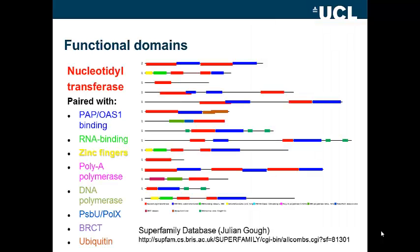This image, taken from the SuperFamily database, illustrates the occurrence of nucleotidyl transferase domains shown in red. Mostly, these occur together with PAP-OAS1 binding domains, but they also occur with a wide range of other domains, including RNA binding domains, zinc fingers, and BRCT domains. None of these proteins would be considered moonlighting merely because they contain domains having different functions.